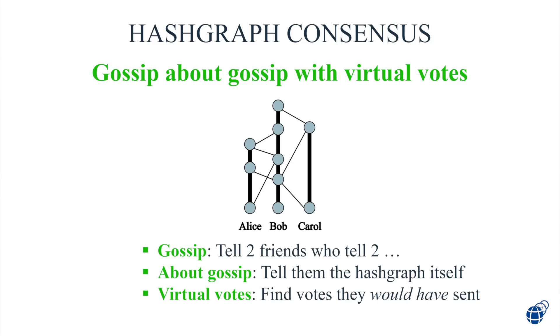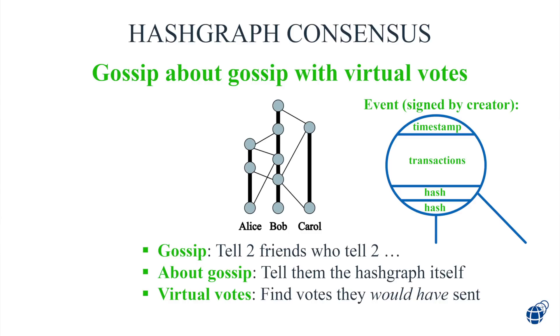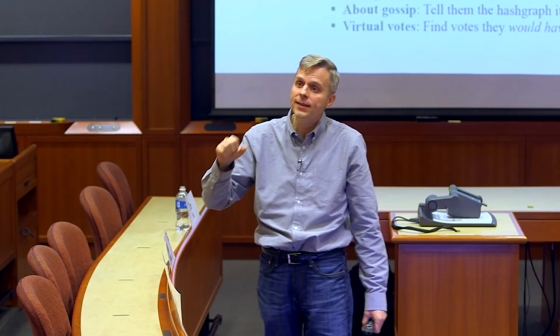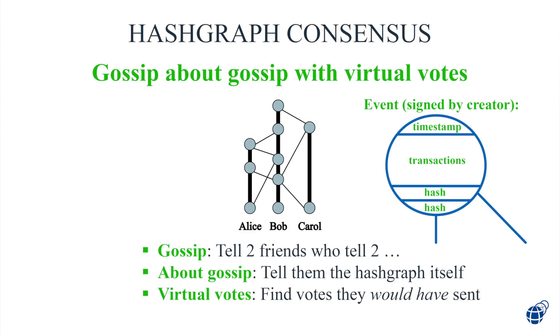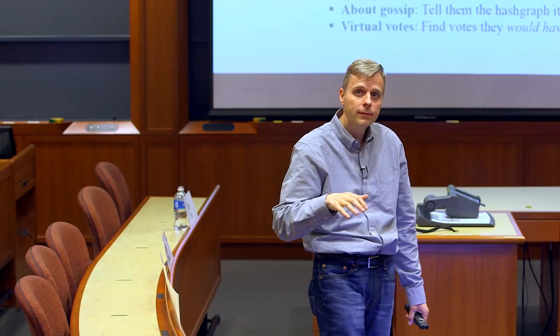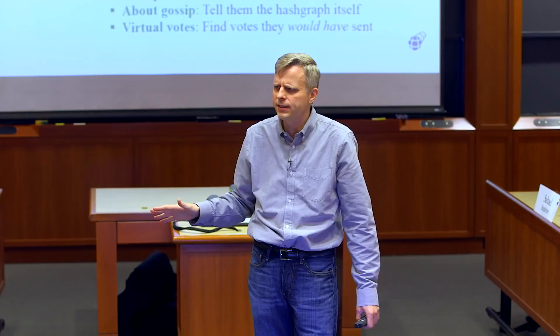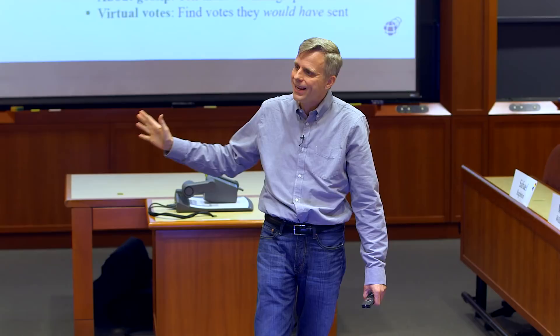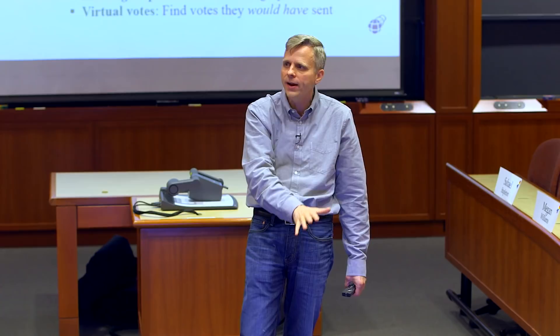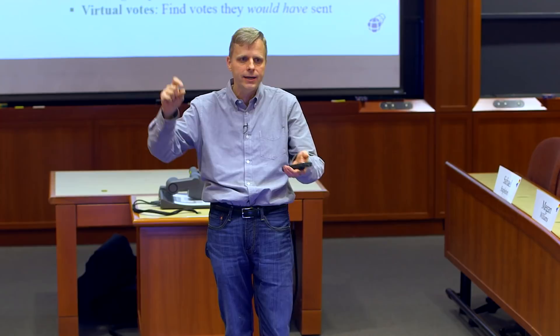One of these circles has transactions, a timestamp, a signature from its creator, and two hashes — even those can be compressed because I'm always sending you the hash of an object you already have in memory. Hashgraph works by gossip about gossip with virtual voting. This gossip-about-gossip thing is weirdly self-referential, but you get all the decades' worth of math proofs — asynchronous Byzantine, fair, and the speed is as good as you're going to get. You're just paying a tiny penalty of two hashes, and there's no communication at all for the consensus part.